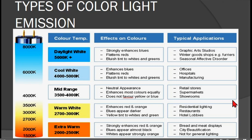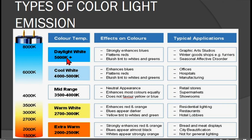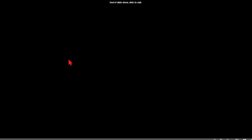Next, we have the types of color emission. The color temperature is measured in Kelvin. We have daylight, cool white, warm white, and extreme white, each with different color effects: strongly enhanced blue, flat red, bluish, and neutral white. This is important for landscaping or interior lighting where the light color adds to the beauty of the room or building. Typical applications are shown for each color temperature. That covers everything in our discussion — enjoy learning.